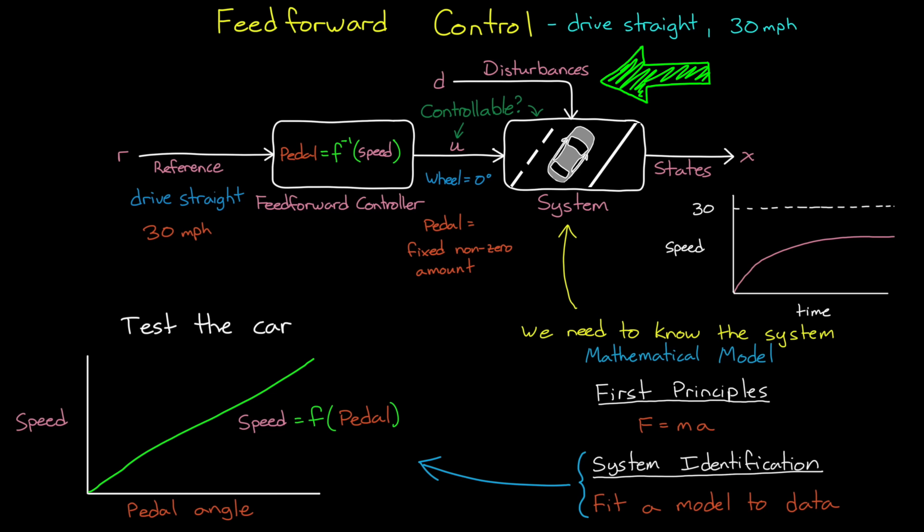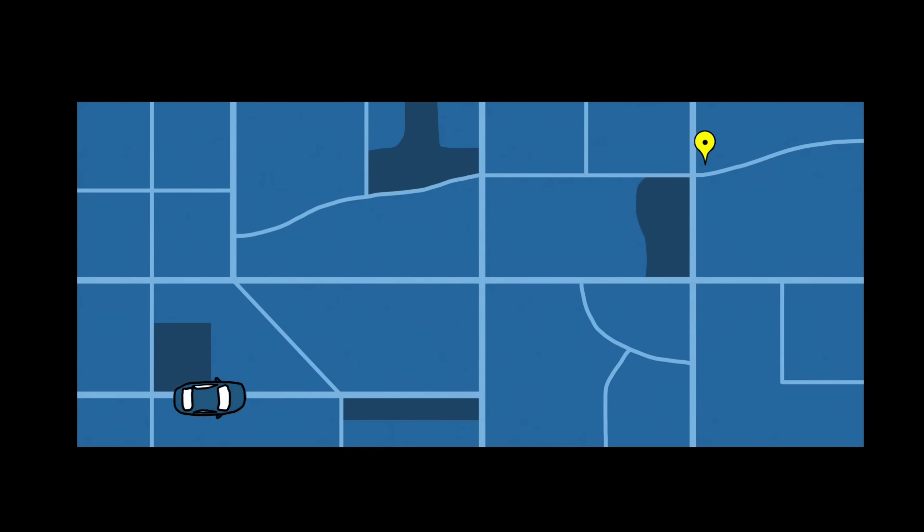Of course, it doesn't take much imagination to see that feed-forward control breaks down for systems that aren't robust to disturbances and uncertainty. I mean, imagine wanting to autonomously drive a car across a city with feed-forward control.